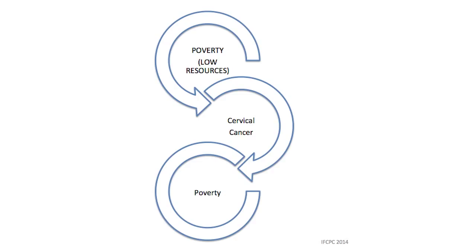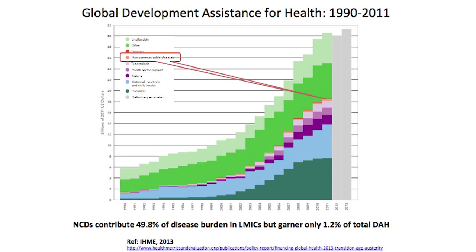So we have a poverty–cervical cancer–poverty cycle. And the question is, how do we break this cycle? How do we break this cycle without ending poverty? Ending poverty is ultimately the key. But what can we do to break this cycle creatively? This slide shows you all of the global development assistance for health that's poured into countries across the globe, particularly lower- and middle-income countries, for what is called non-communicable diseases, of which cervical cancer is one.